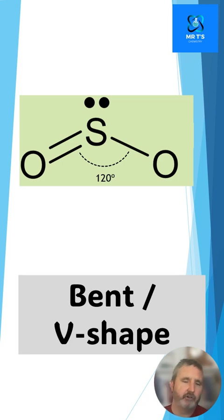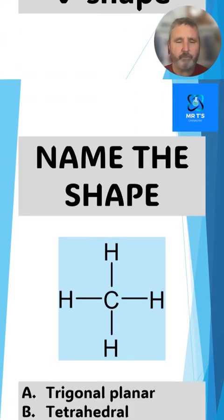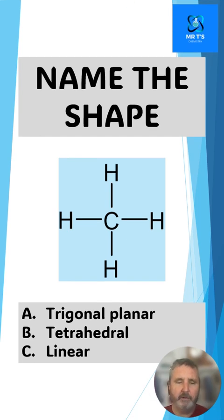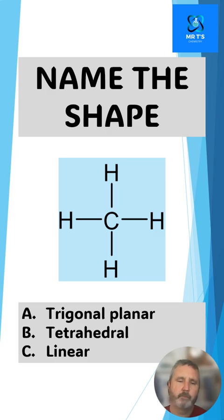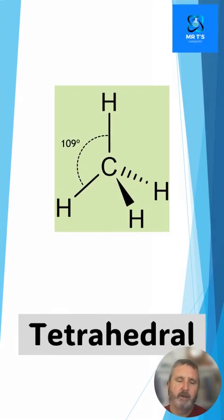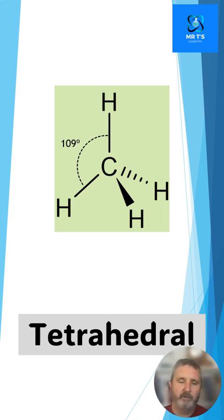Let's have a look at the next shape. This is methane, CH₄. Is this A trigonal planar, B tetrahedral, or C linear? From this we can see that it's tetrahedral, with angles of 109 degrees, because all four of these electron density regions push away from each other as far as possible.